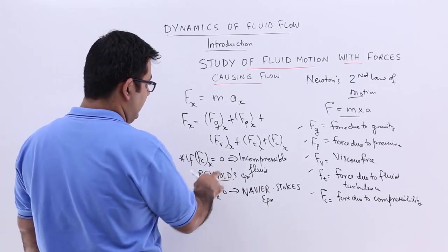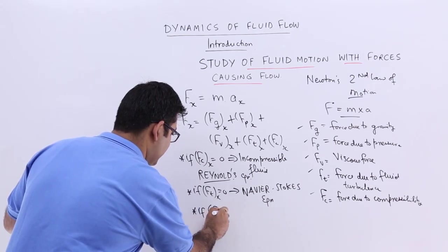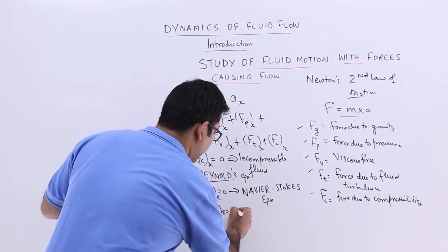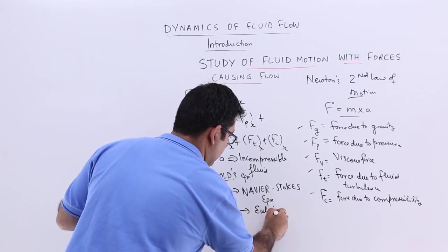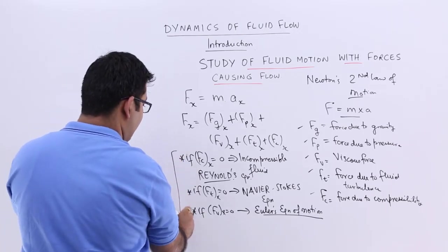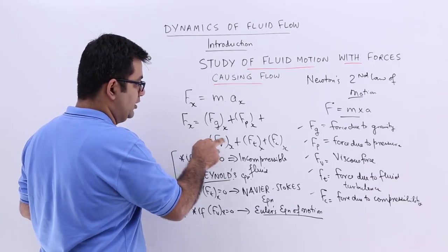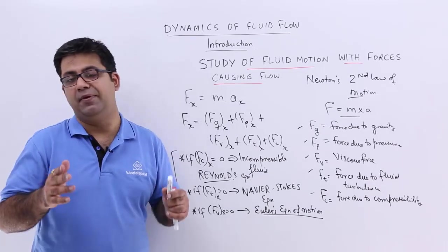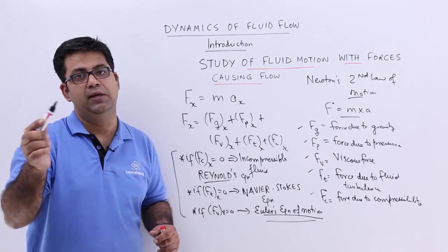Last, if I put the viscous force also equal to zero — if the viscous force in the x direction also becomes zero or negligible — then the resulting equation is called Euler's equation of motion. So you have three kinds of equations depending on whether you set Fc, Ft, and Fv to zero. This is a brief introduction to the dynamics of flow. Let's move on to the next video and look at how we derive Euler's equation of motion.